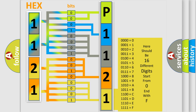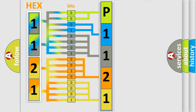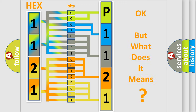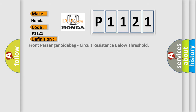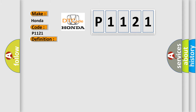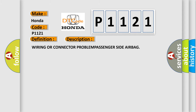We now know how the diagnostic tool translates received information into a more comprehensible format. The number itself does not make sense if we cannot assign information about what it actually expresses. So, what does the diagnostic trouble code P1121 interpret specifically for Honda car manufacturers? The basic definition is: front passenger side airbag circuit resistance below threshold. The short description of this DTC code is: wiring or connector problem, passenger side airbag.